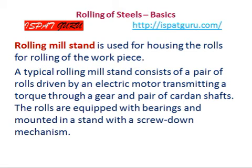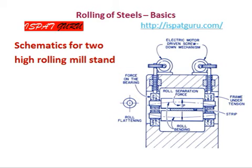A rolling mill stand is used for housing the rolls for rolling of the workpiece. The typical rolling mill stand consists of a pair of rolls driven by an electric motor, transmitting torque through a gearbox and a pair of drive shafts. The rolls are fitted with bearings and mounted in a stand with a screw-down mechanism. Here, the figure shows a cross-section of the stand — shown as a flat product stand with the two work rolls and the workpiece. This is only a schematic diagram.